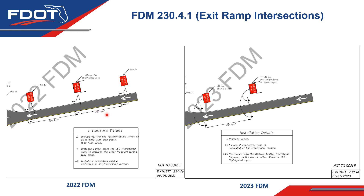However, after further coordination with the DTOE and the wrong way driving task team, it was determined that this third set is not necessary because not only are the optional second set of static signs being shown, we are going greatly over and above by making the second set highlighted signs. The new 2023 version of the exhibit shows the clarification and states that coordination with the DTOE is required to determine if this second set of signs should be static or LED highlighted. That decision should also be documented in the design file.